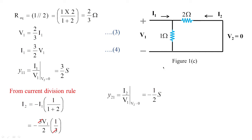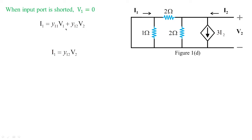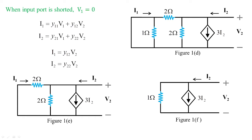Now let us obtain the parameters when the input port is shorted. When the input port is shorted, V1 = 0, so I1 = y12·V2 and I2 = y22·V2. This is shown in figure 1d. When the wire shorts the input, the 1 ohm is shorted and goes off, leaving 2 ohms in parallel with 2 ohms. Figure 1d reduces to figure 1e, which then reduces to figure 1f, since 2 parallel with 2 gives 1 ohm.